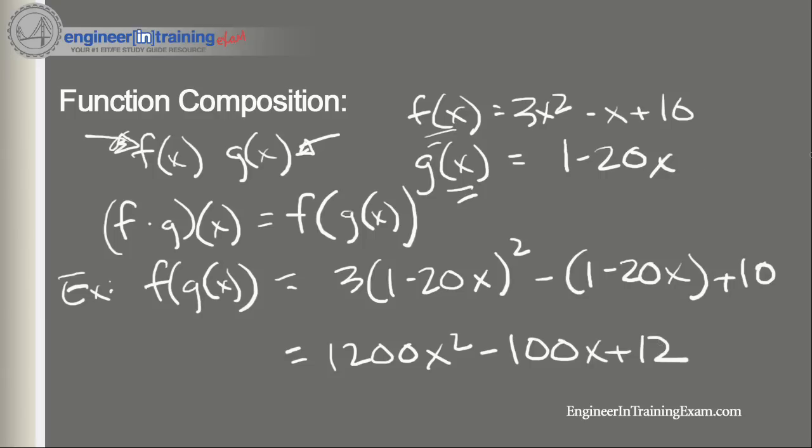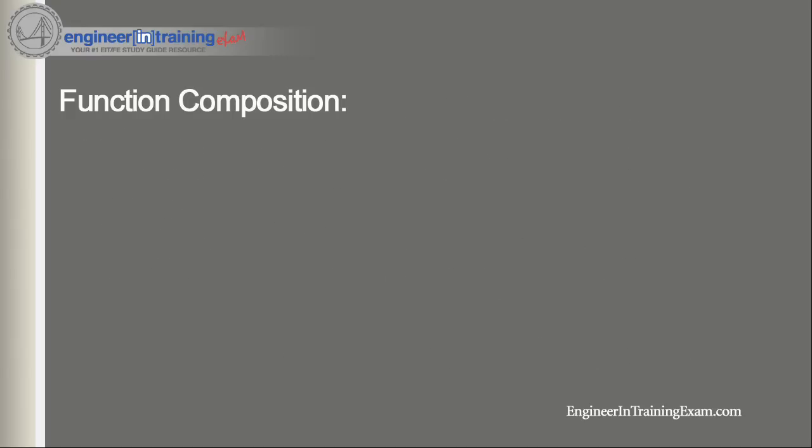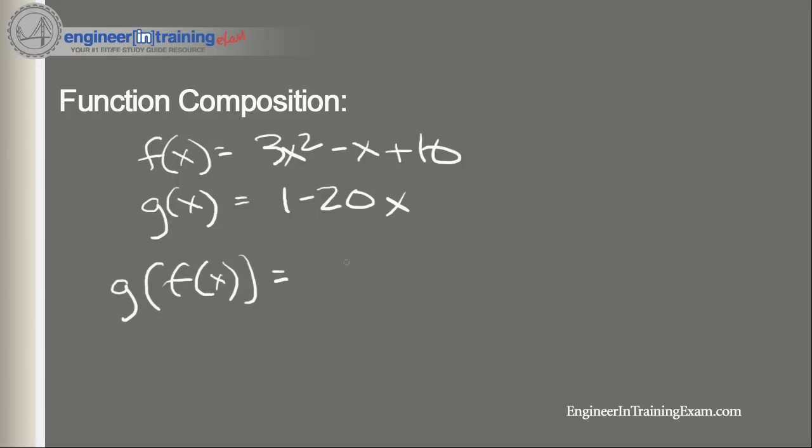The order in which the functions are listed is important. Interchanging the order will usually result in a different answer, and we can illustrate that by using the same functions here. Let's use f(x) equals 3x² minus x plus 10, let's use g(x), the same one, as 1 minus 20x. This time, let's plug f(x) into g(x) and see what we get.